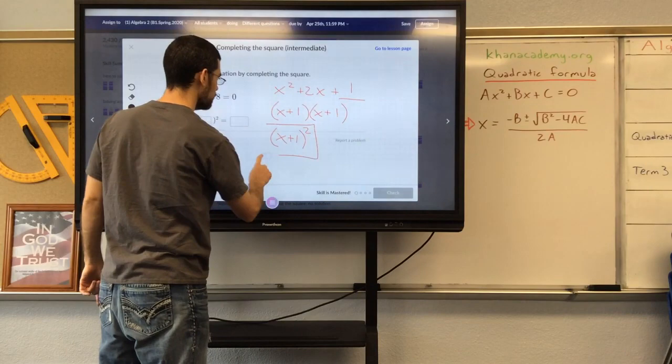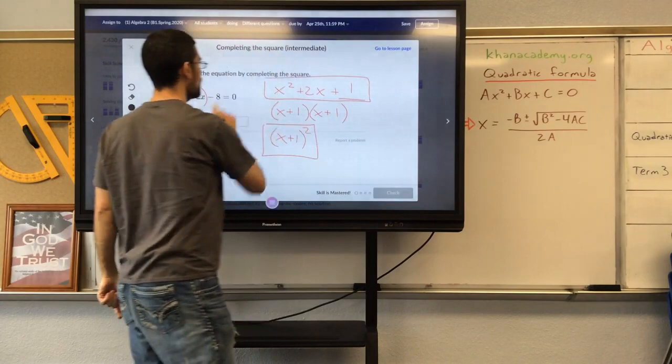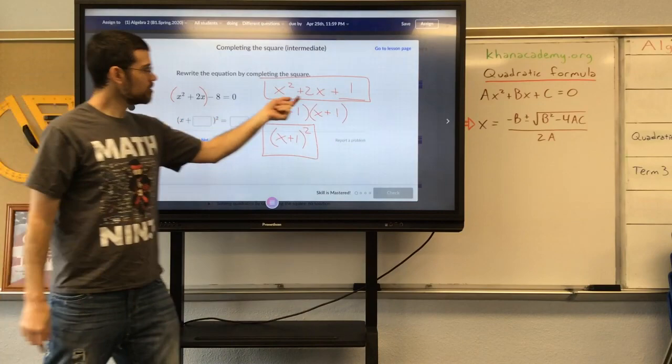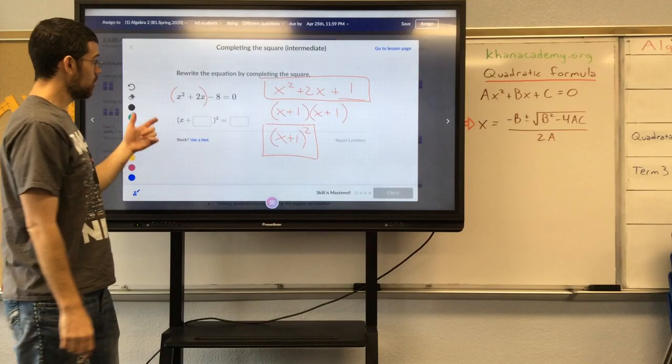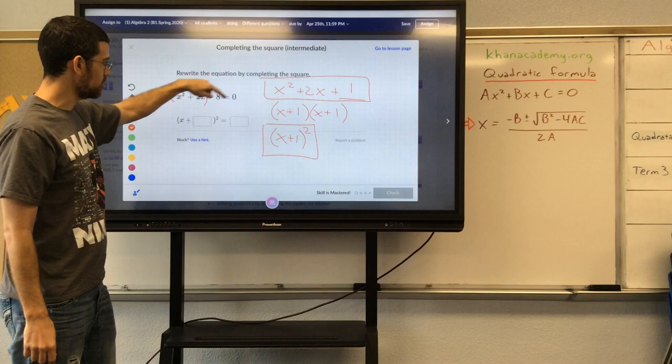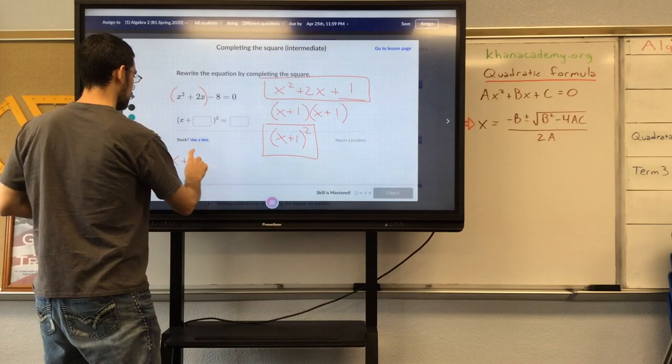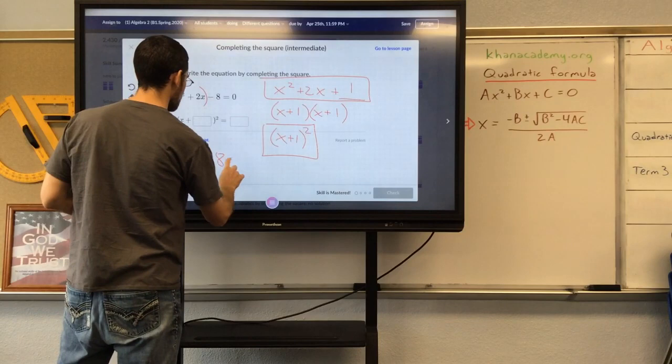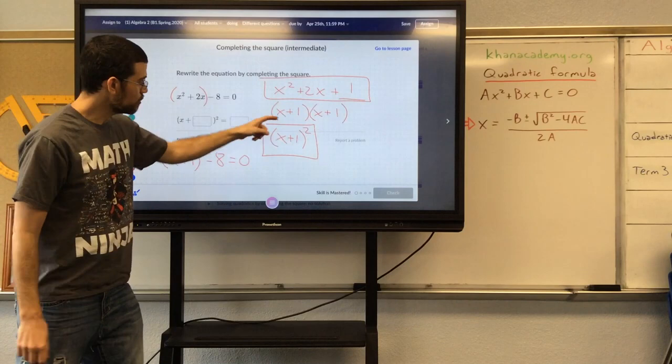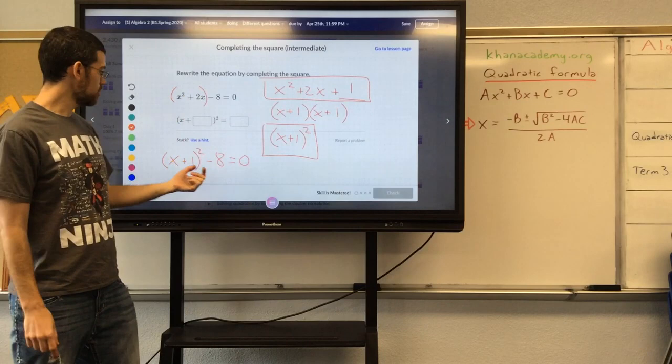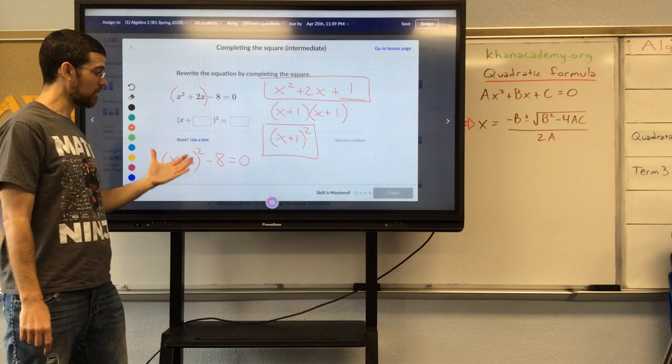This expression right here is equal to this expression right here. Well, that's good because it includes the part we have, but it also added 1 that we don't have here. When I put this here, I've added 1 to the left side of my equation.